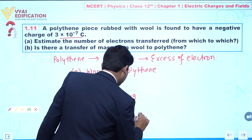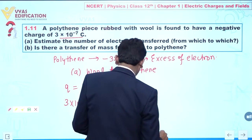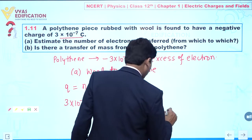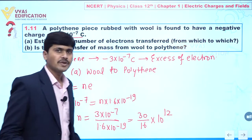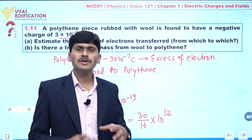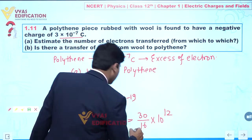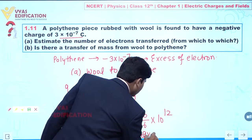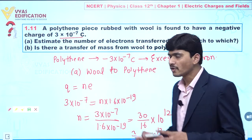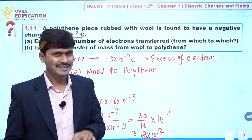From here we can write 30 by 16, multiplied by 10 to the power 12. Since the number of electrons transferred cannot be a fraction, this is approximately equal to 2 into 10 to the power 12. So, 2 into 10 to the power 12 electrons are transferred from wool to polythene.